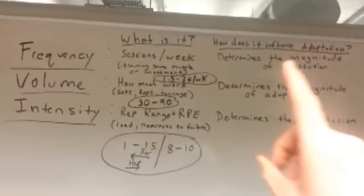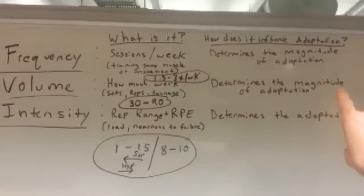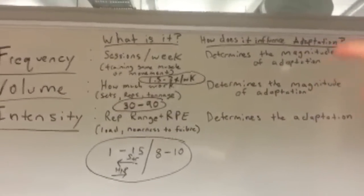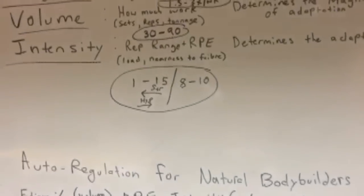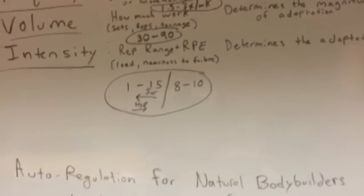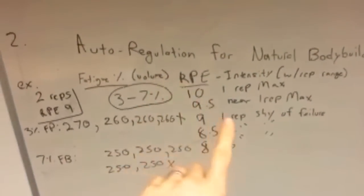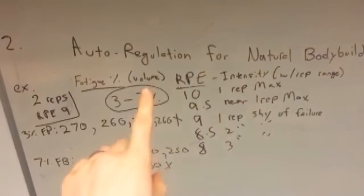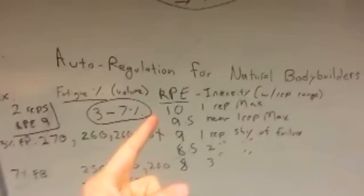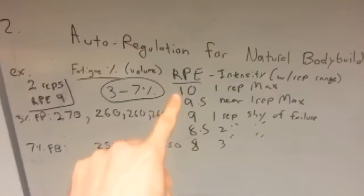Now, to avoid going crazy with your volume and doing too much, thinking more is better without realizing that better is better — that's where auto-regulation for natural bodybuilding comes in, the second question. So how do we auto-regulate for intensity and volume? Well, we use an RPE. We've talked about the RPE scale before; let's go over it again quickly.